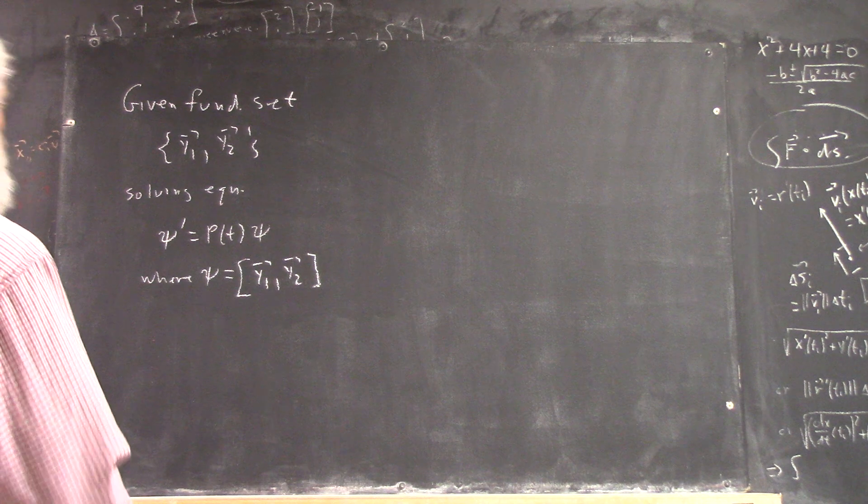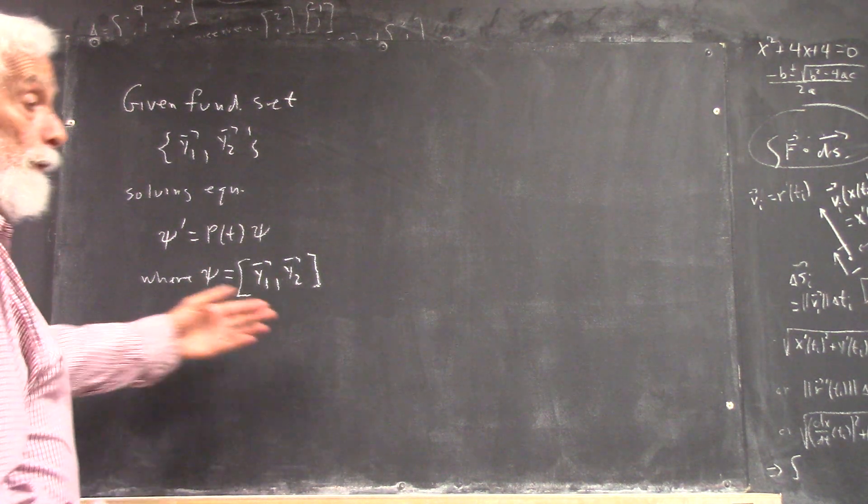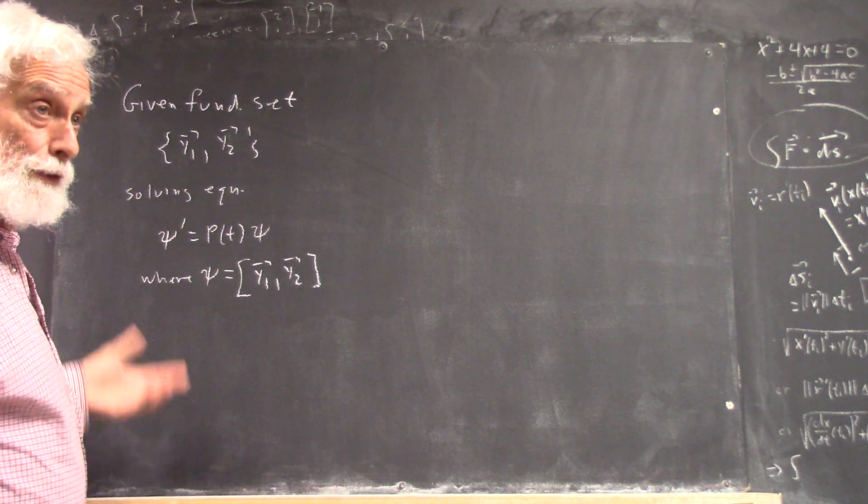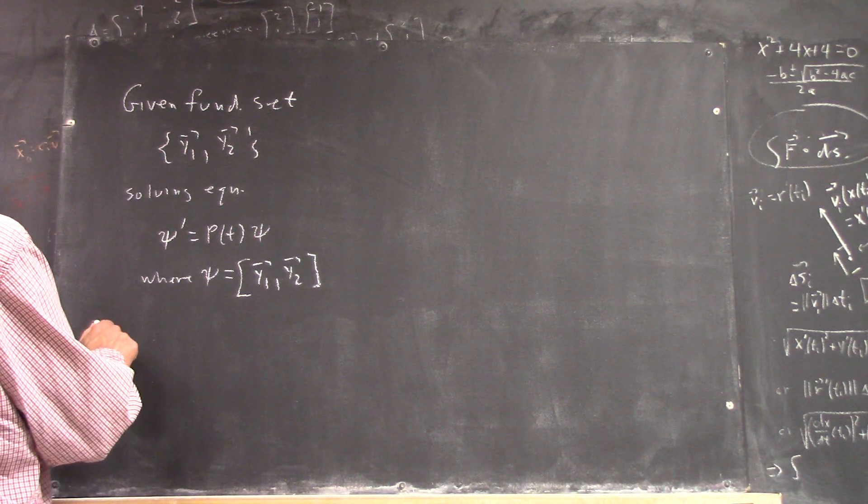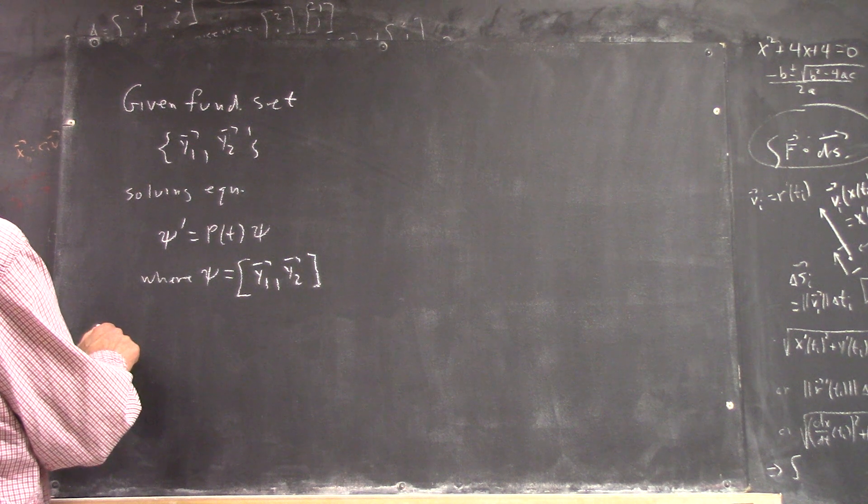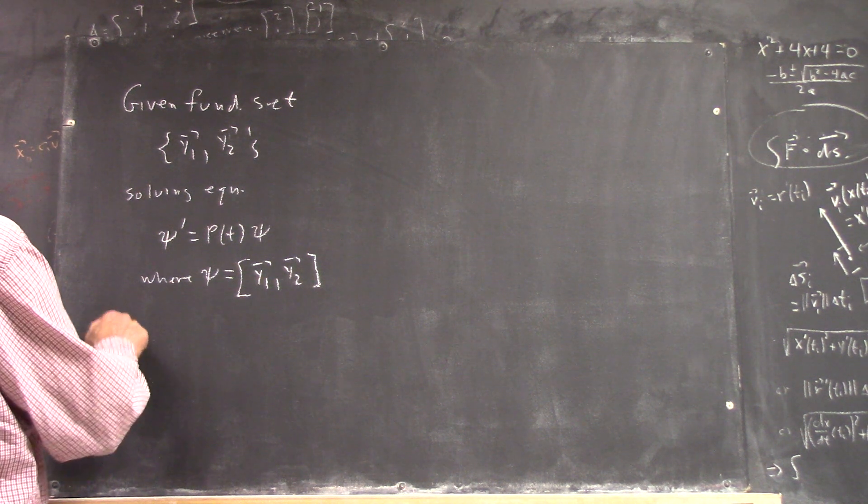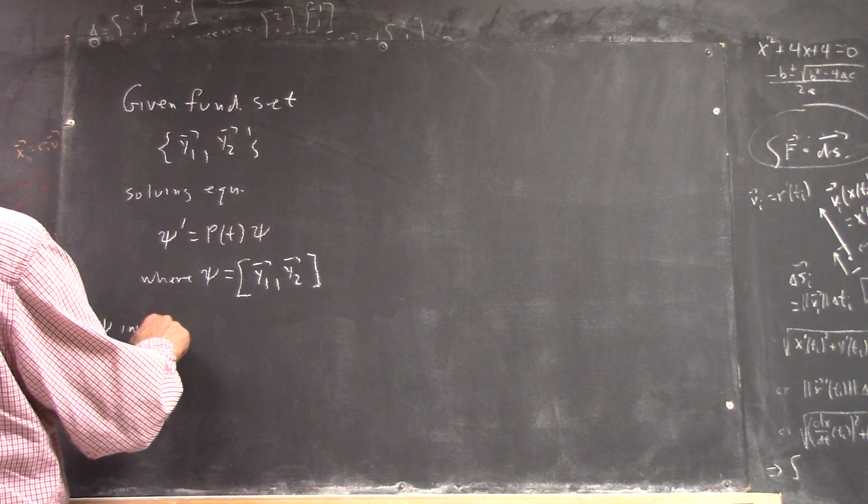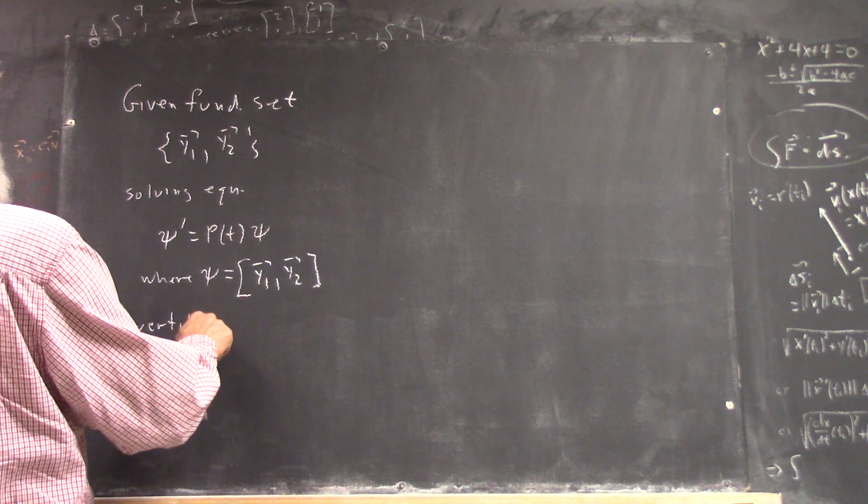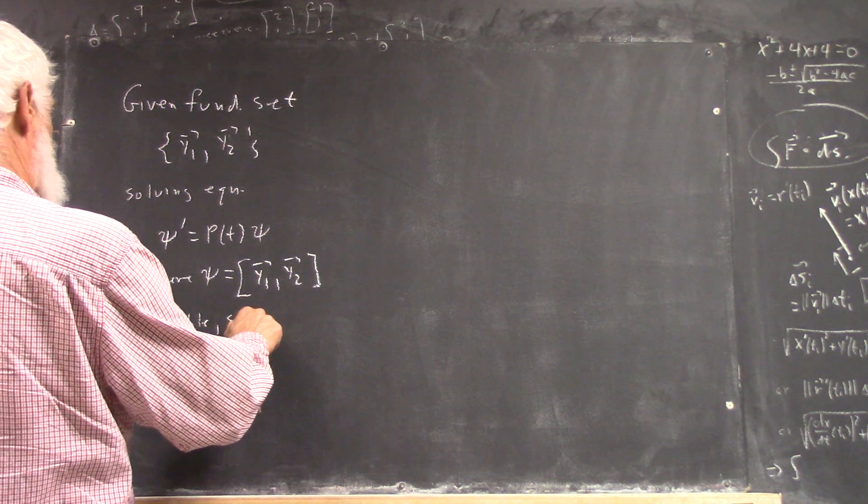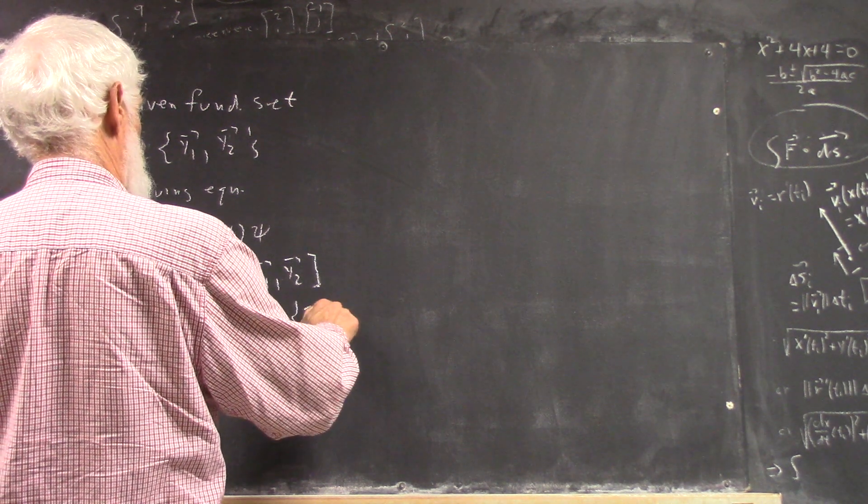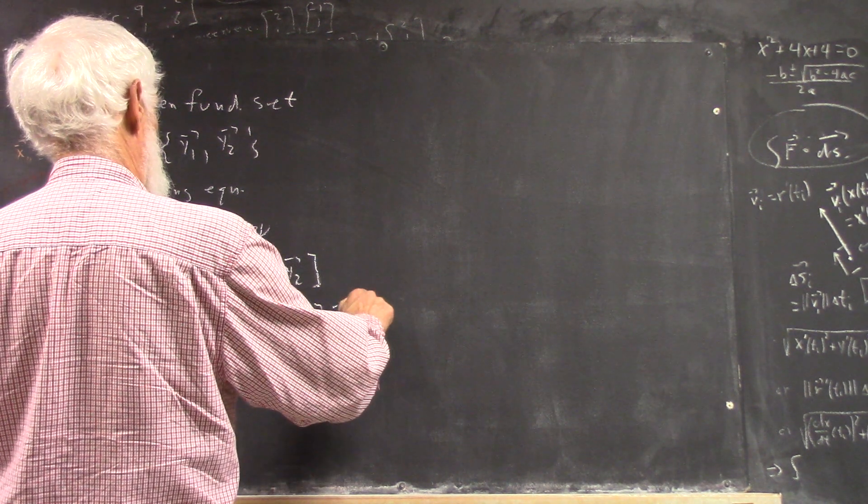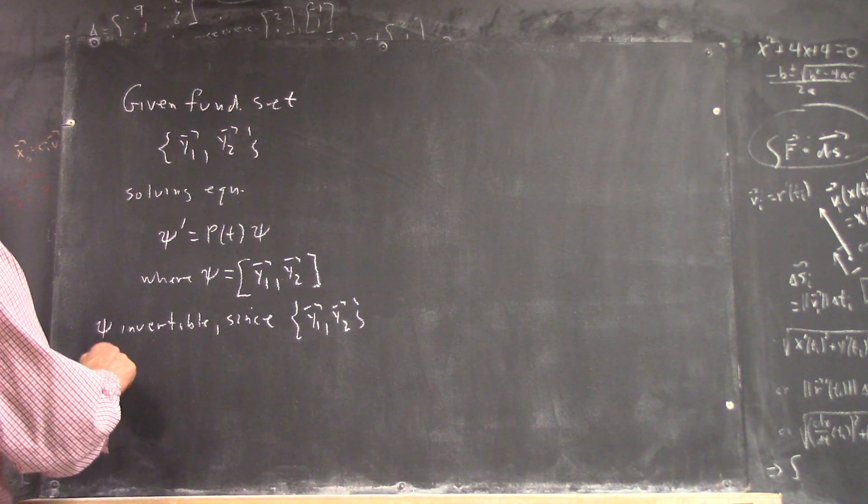We know that this matrix is invertible because its Wronskian is non-zero. Its determinant is non-zero. So ψ is invertible, since your y1, y2 set is linearly independent.